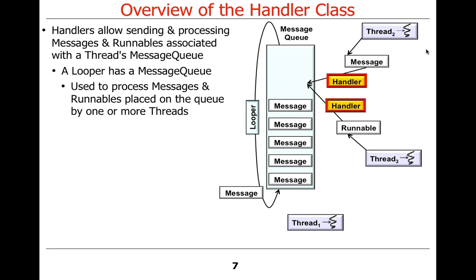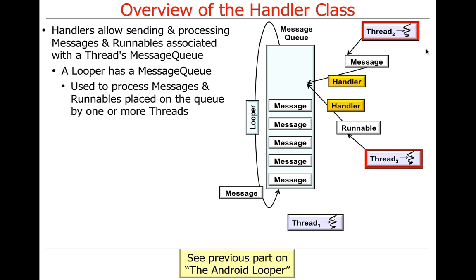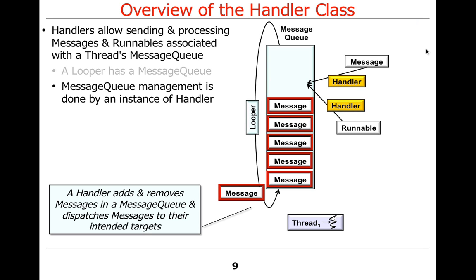Message queues are used to process messages and runnables placed on the queue by one or more threads. Handlers are the means to get things on the queue. A message queue is managed internally by a handler — getting stuff onto the message queue, and actually getting stuff processed once it's taken off the message queue, is done by a handler.